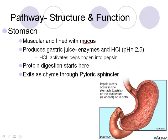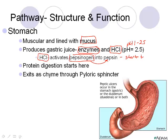The stomach is a muscular organ lined with mucus to protect us from gastric juices. The gastric juices have a very low pH — between 1 and 2.5 — and are made up of enzymes and hydrochloric acid. HCl's job is to activate an enzyme called pepsinogen into its active state, pepsin, which begins to break down protein.